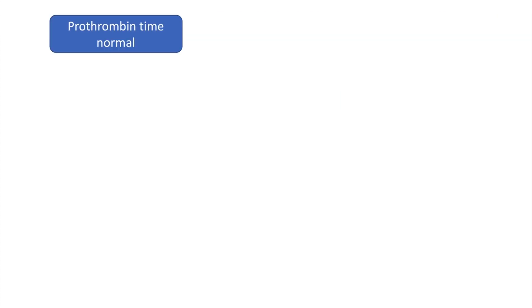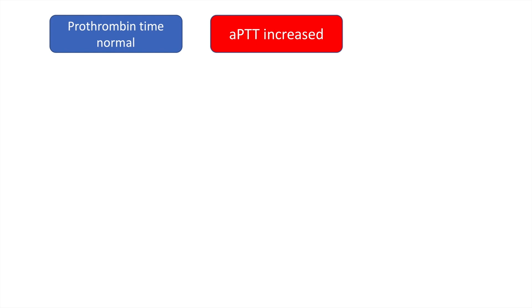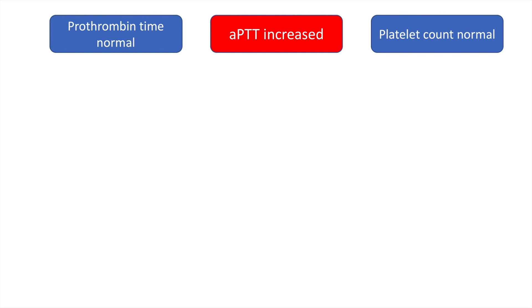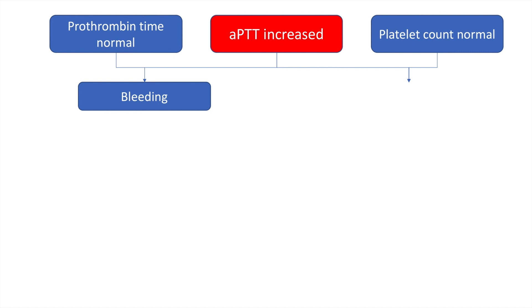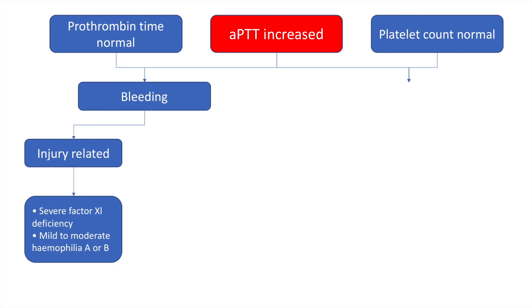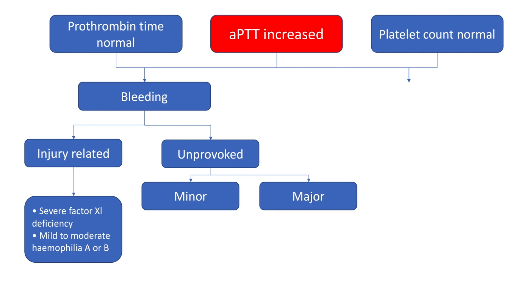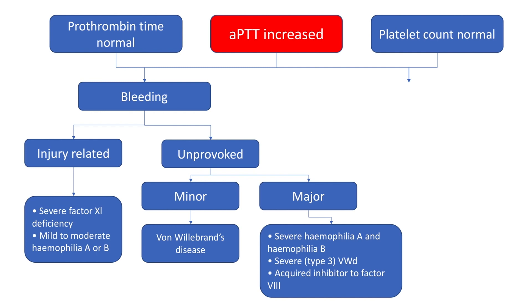The next scenario is where the prothrombin time is normal but the activated partial thromboplastin time is increased with a normal platelet count. Note that PT is affected by the extrinsic pathway, specifically factor 7, and APTT is affected by the intrinsic pathway. If the patient is bleeding and it is injury-related, it may be severe factor 11 deficiency or mild to moderate hemophilia A or B. If the bleed is spontaneous, minor bleeds suggest von Willebrand's disease, while major bleeds suggest hemophilia A, B, or severe type 3 von Willebrand's disease.